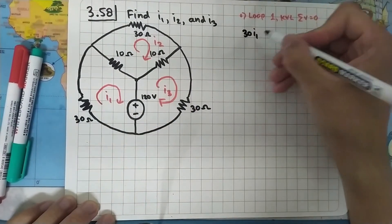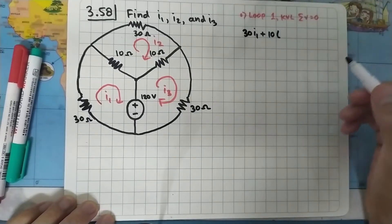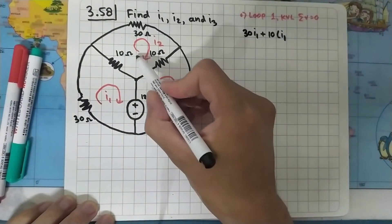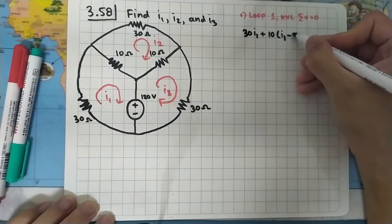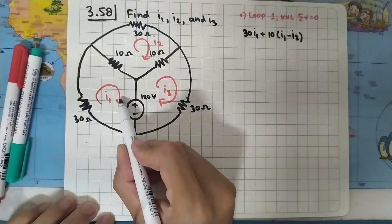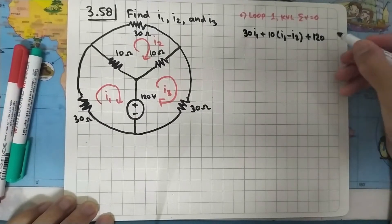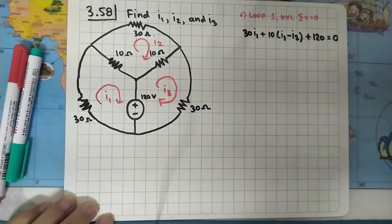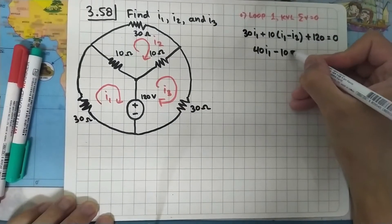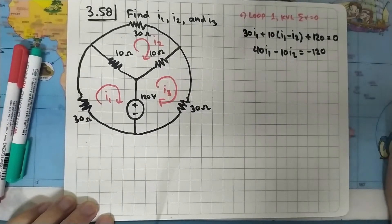Starting at the 30-ohm resistor, the only current passing through it is i1, so we multiply by i1. Moving on to the 10-ohm resistor, the focus is still i1, but i2 is flowing in the opposite direction, so we subtract i2. Then we move to the voltage source where current flows from positive to negative, so the sign is positive.